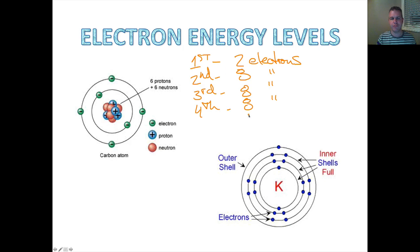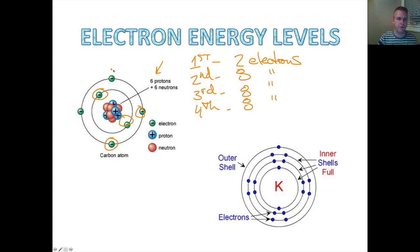Understanding electron structure is very important. If we look at a carbon atom — carbon has the atomic number of six, meaning six protons. Here we have six electrons. Two of them exist in the first energy level, then we start to fill the second energy level.